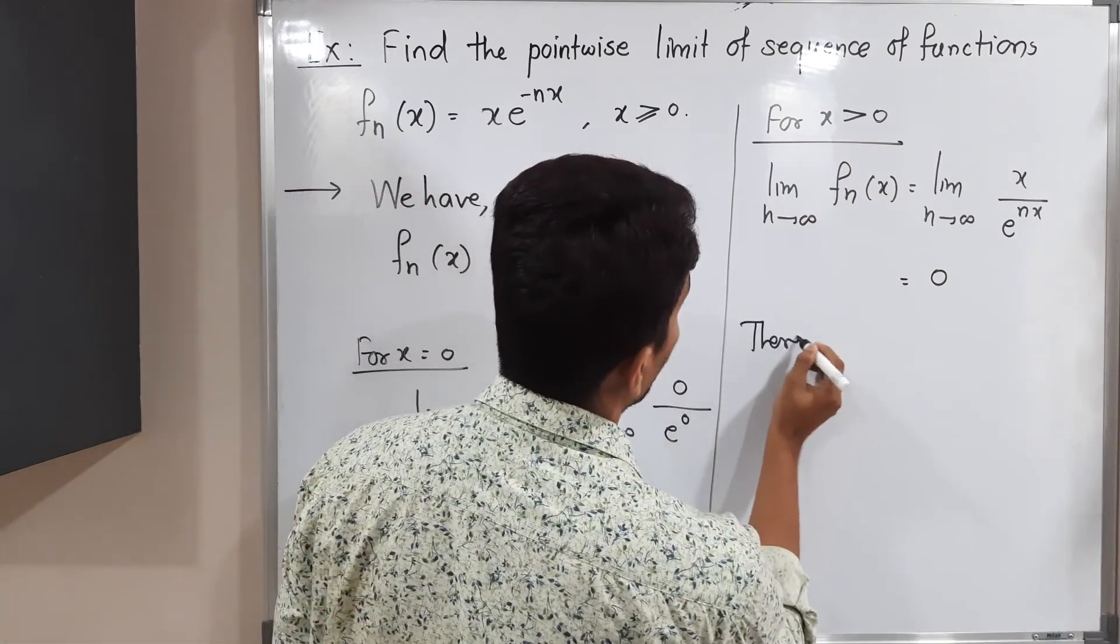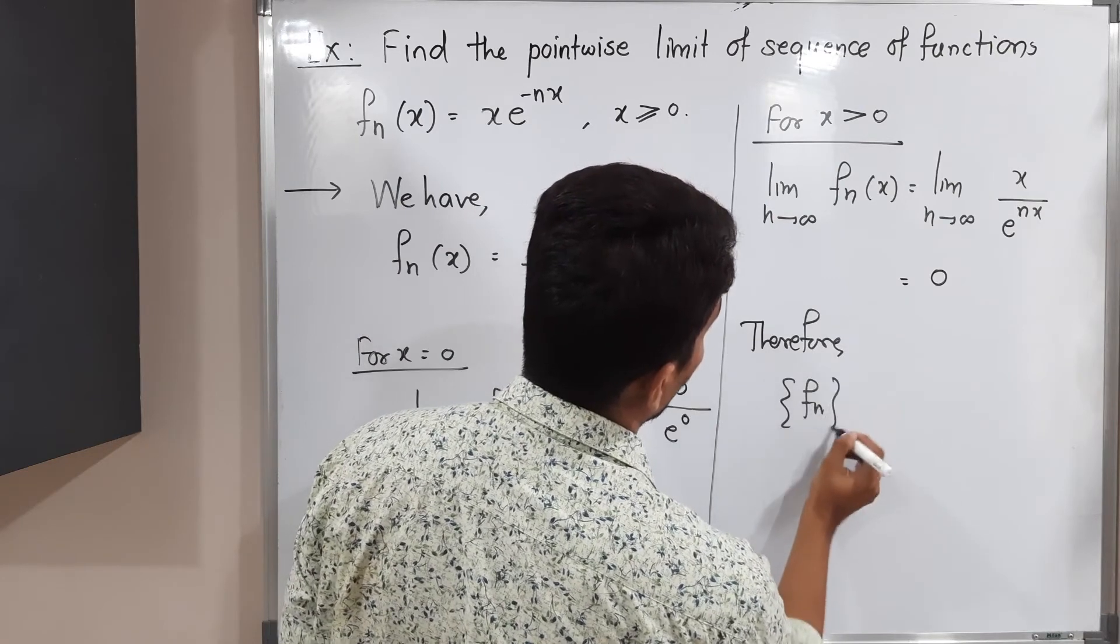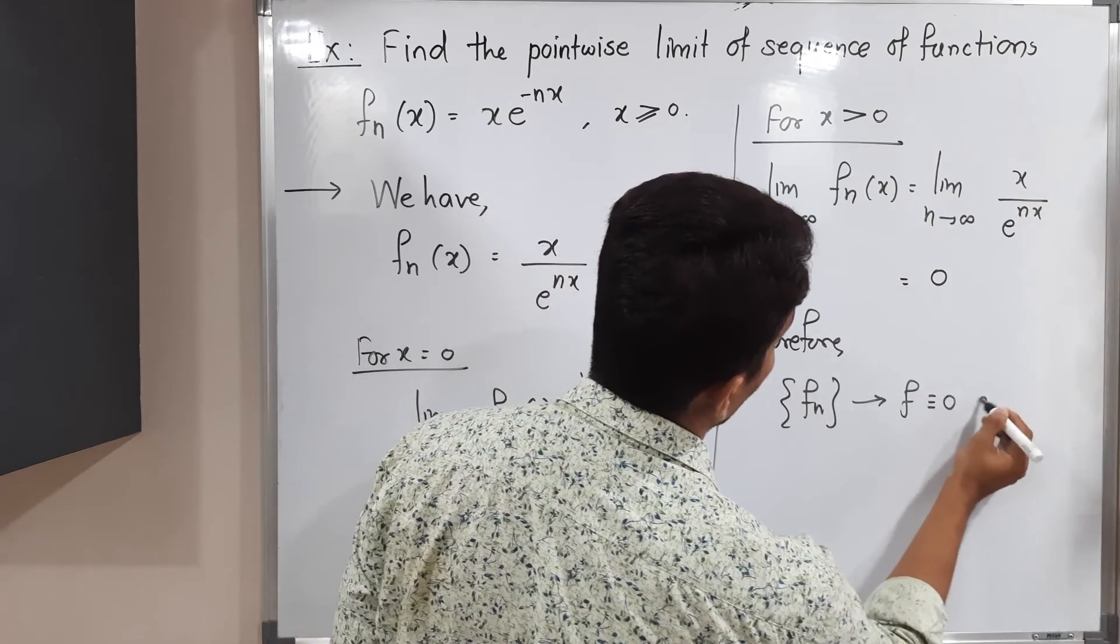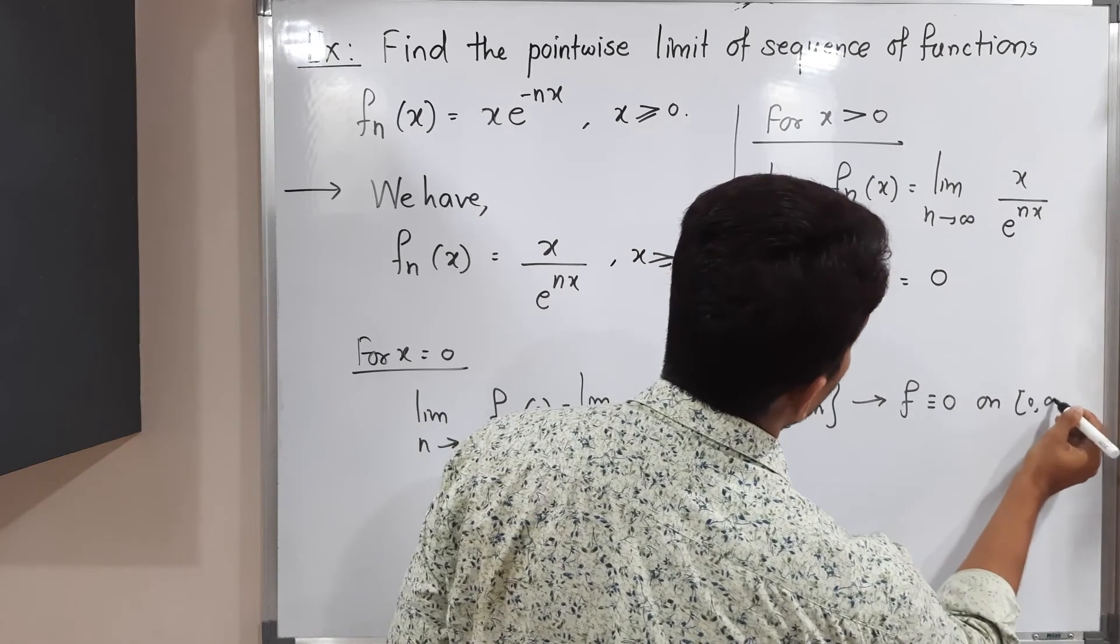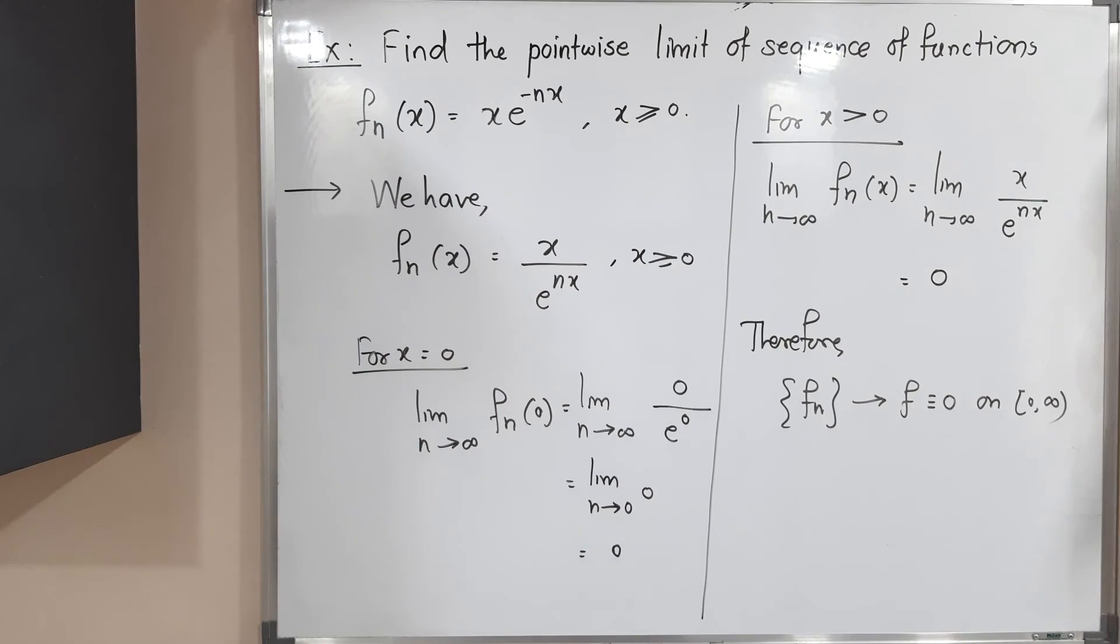Therefore, what will be our conclusion? Our sequence of functions fn converges to f = 0 on the closed interval [0, ∞). So 0 is the pointwise limit of the given sequence of functions.